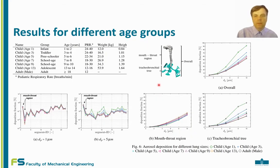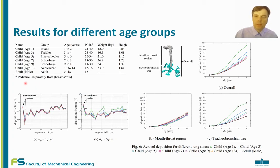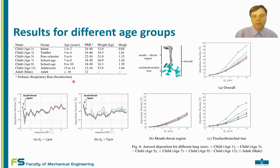We did several different studies like this, and the final result we considered was measuring the deposition fraction — the percentage of particles that deposited in different parts of the lung — as a function of particle diameter. We considered particles between one micron and ten microns, across different age groups. The age groups were established by scaling the original adult male lung geometry for different ages of children based on data found in the literature for the shape and size of lungs in children. We also varied the pediatric respiratory rate — how many breaths per minute are used by children.